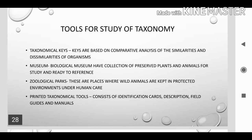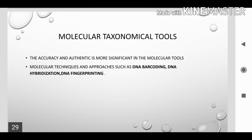Tools for the study of taxonomy. Tools and taxonomy aids may differ for plants and animals. In the case of animals, classical tools are museums, taxonomical keys, and zoological and marine parks. Technological advancement has helped evolve molecular taxonomical tools from classical tools. Molecular techniques such as DNA barcoding, DNA fingerprinting, and DNA hybridization are used as molecular taxonomical tools.